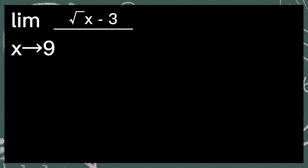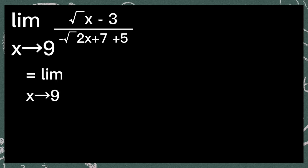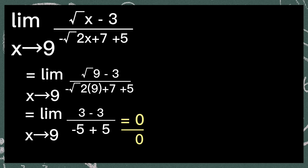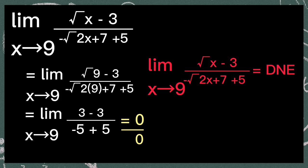Next, the limit of the square root of x minus 3, over negative square root of 2x plus 7 plus 5, as x approaches 9. Substitute 9 to all of the x's. So we have the square root of 9 minus 3, over negative square root of 2 times 9 plus 7 plus 5. The square root of 9 is equal to 3, so 3 minus 3 is equal to 0. The denominator evaluates and the limit does not exist.